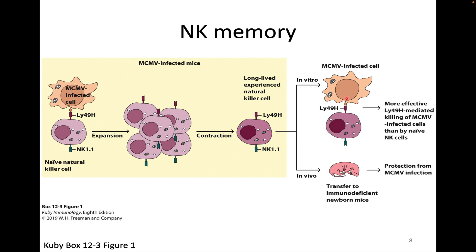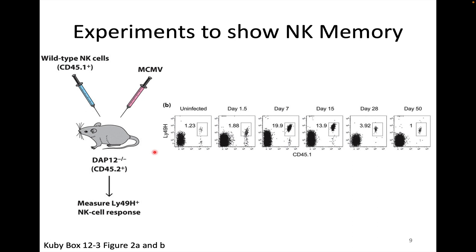We could also see that if we transferred these cells into immunodeficient mice, we could protect them from infection. At the beginning, only 1.23% of cells in the experiment were these NK cells, but over time we saw an increase all the way up to 19.9%, and then they came back down — following the same kinetics curve we see for activated adaptive immune cells, not what we think of in terms of innate immune cell clonal expansion.